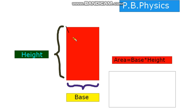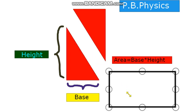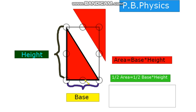Now if we cut this rectangle in half in a diagonal way, we get a triangle. So the area of this triangle is half the area of this rectangle. Half the area of this rectangle is half times base times height — this is the area of a triangle. Consider subscribing, thanks for watching.